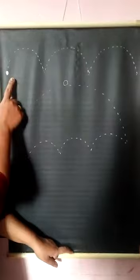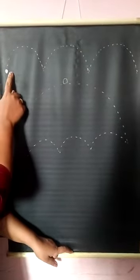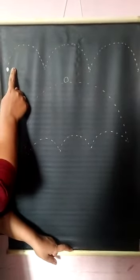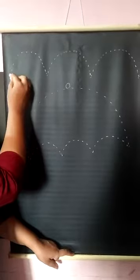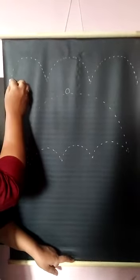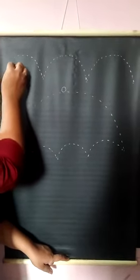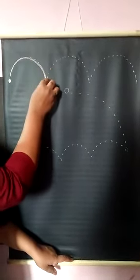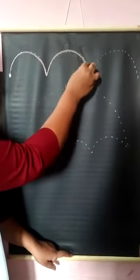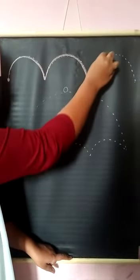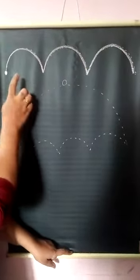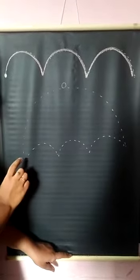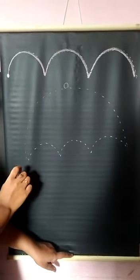Today I am going to teach you how to write curve lines. Children, I will show you how to draw the curve. So start from your left to right — curve, curve, curve. With the help of curve, I will show you how to draw an umbrella.